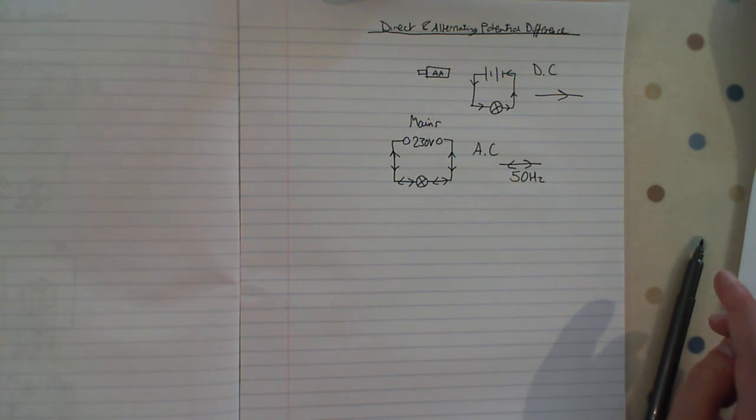And that is direct and alternating current and direct and alternating potential difference. So let's go.